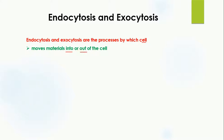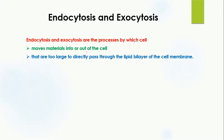You may ask: we have other processes like diffusion, active transport, and passive transport — why do we need endocytosis and exocytosis? The reason is that molecules which are too large to pass through the cell membrane by diffusion or active transport are transported by these two processes, which are used for the bulk transport of molecules.